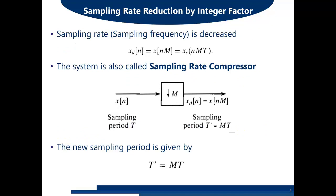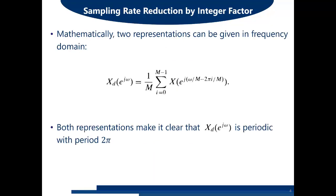At the block level, decimation is represented as a sampling rate compressor: input x(n) passes through a block labeled M with a downward arrow (upward for interpolation), giving output x_d(n) = x(nM). The new sampling period T' = M·T, since the sampling frequency is reduced by factor M. Correspondingly, the new sampling frequency f_s' = f_s / M.